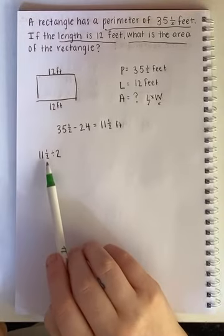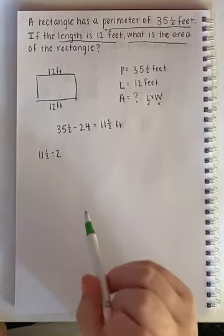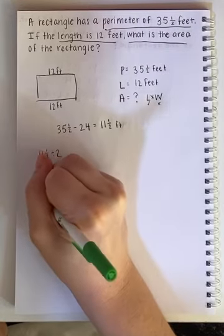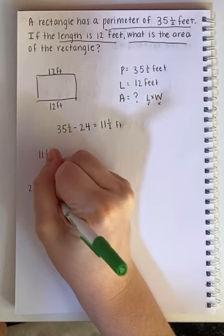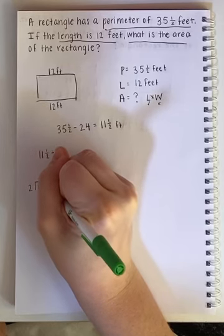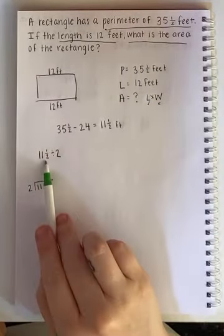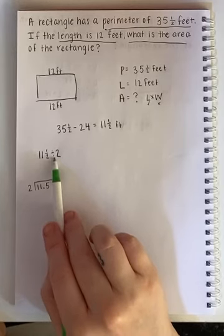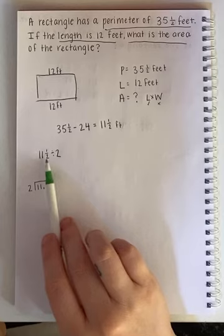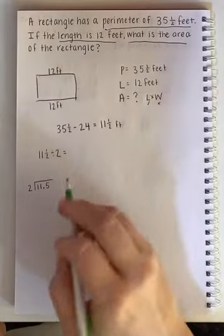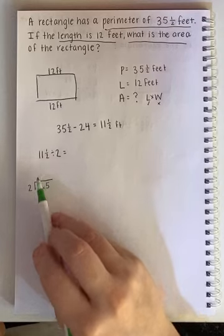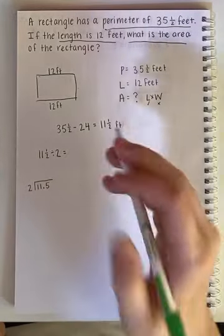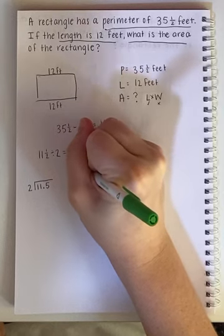Now you could solve this in one of two ways. You could think of this as 11.5 and divide it by 2. So your work would look like this: 11.5. Or you could change this into a mixed number and then divide by 2. So I'm going to show you that way. Maybe you've forgotten how to do that. This is from a couple units back. So I'm going to first change 11 and a half into an improper fraction which would be 23 over 2.